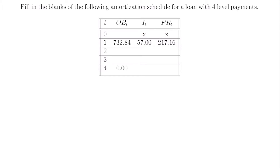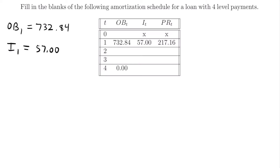Those values do not exist, but we want to fill in the rest of the values in this table. We know that the outstanding balance at time equals one is $732.84. We also know that the interest accumulated at time one is $57, and the principal paid at time equals one is $217.16.